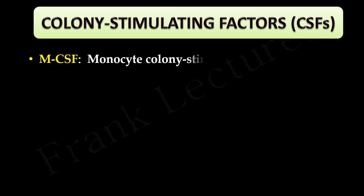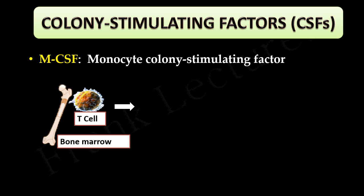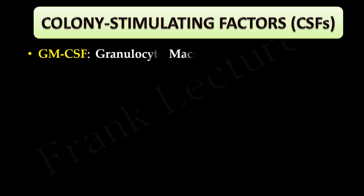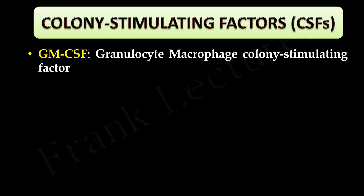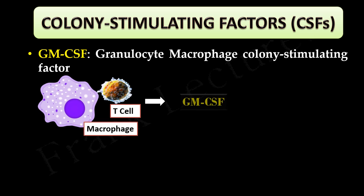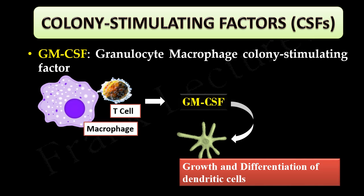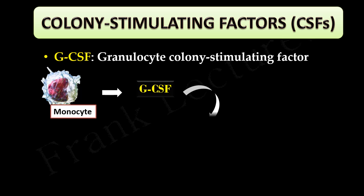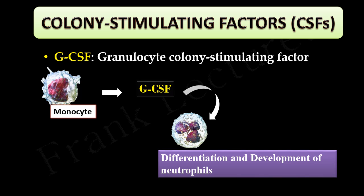The important colony stimulating factors are: MCSF (monocyte colony stimulating factor), produced by T cells and bone marrow, which affects the growth of cells of the monocyte lineage; GMCSF (granulocyte-macrophage colony stimulating factor), produced by T cells and macrophages, which helps in growth and differentiation of dendritic cells; and GCSF (granulocyte colony stimulating factor), produced by monocytes, which helps in differentiation and development of neutrophils.